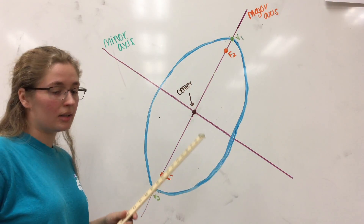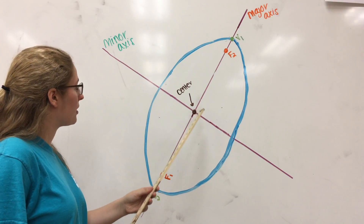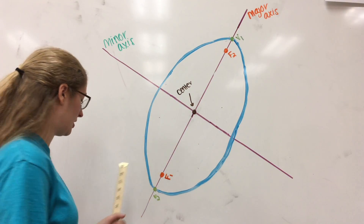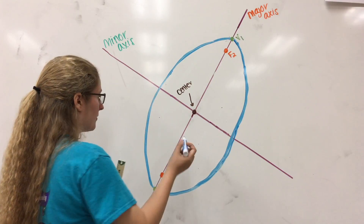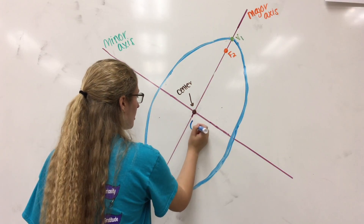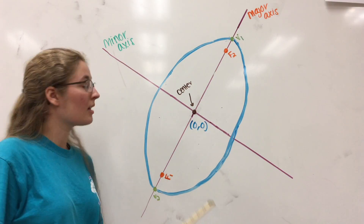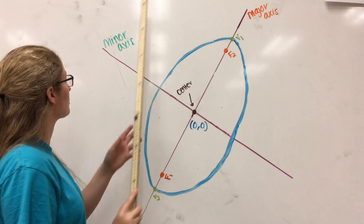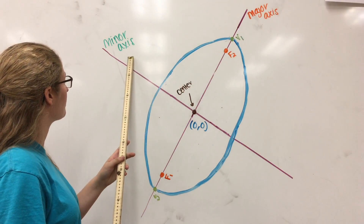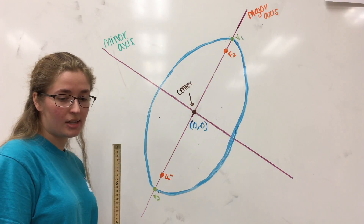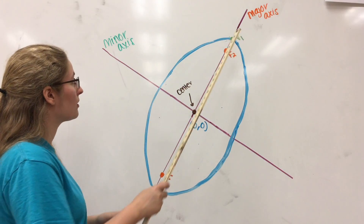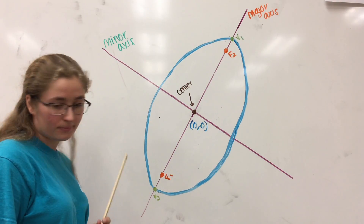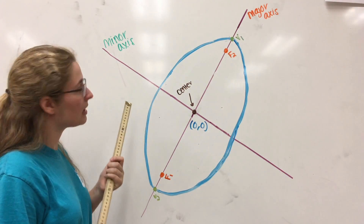They are contained along the major axis. The midpoint of the line segment joining the foci is called the center. The center is at the origin, also known as (0, 0). The line through the center and perpendicular to the major axis is called the minor axis. The two points of intersection are the vertices — vertices 1 and vertices 2 on either side of the ellipse. The length of the major axis is the distance between the two vertices.